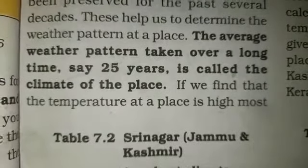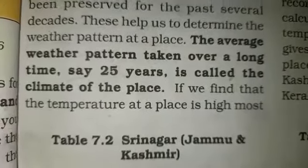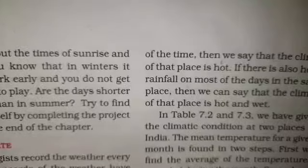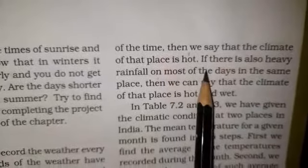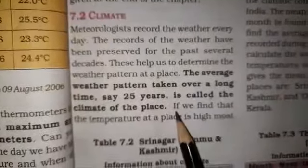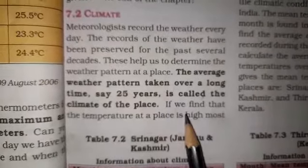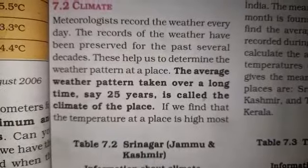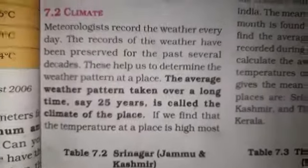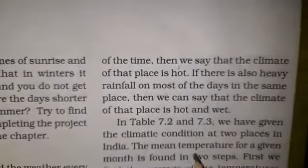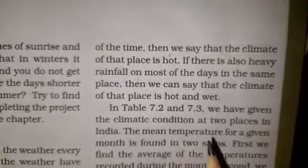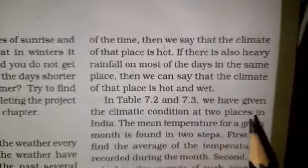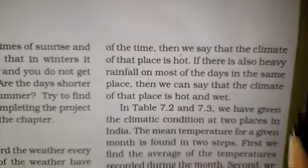If the temperature of that place is high most of the time, then we say that the climate of that place is hot. When the temperature has a high record for 25 years and most of the time the weather is high, we describe the climate accordingly.